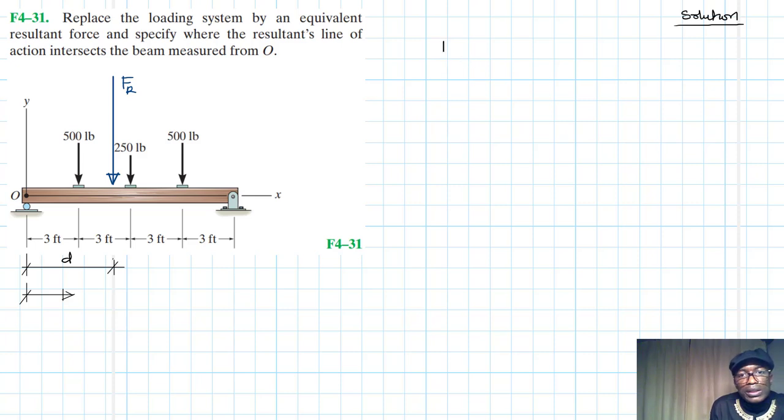So let's write down the equation. What we are saying is FRR, the moment due to FRR times this distance d from O, is equal to the summation of moments about point O.